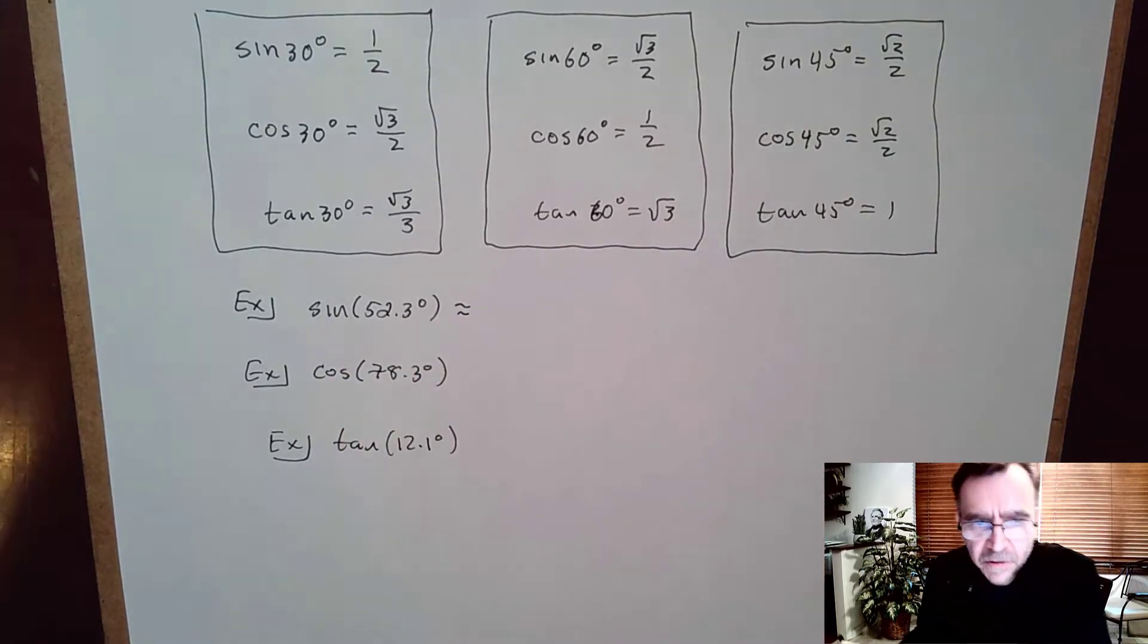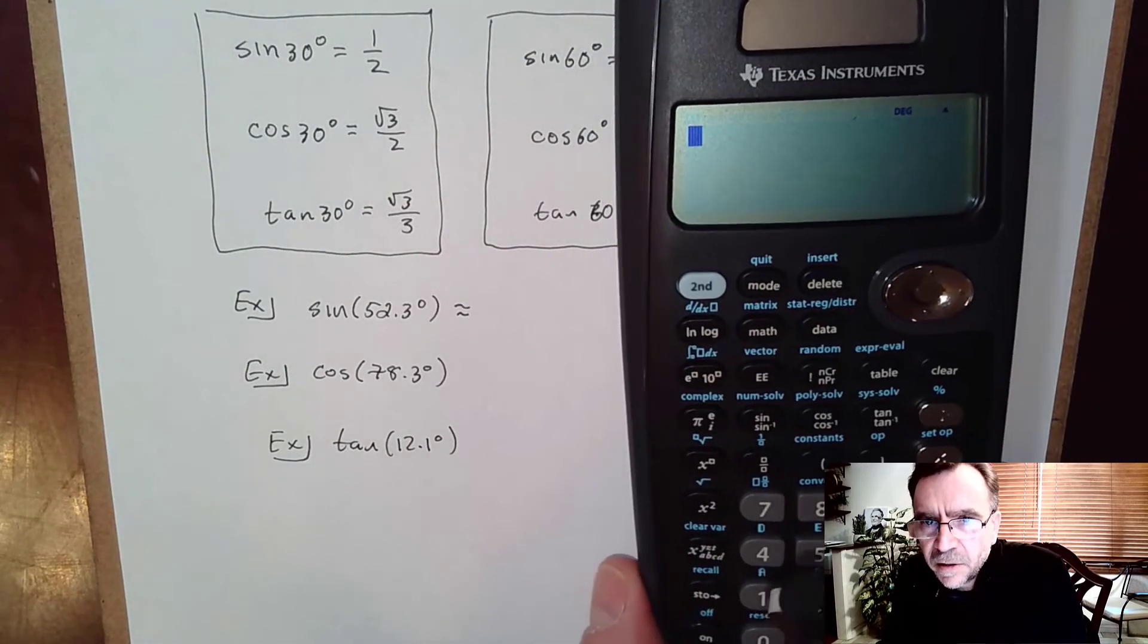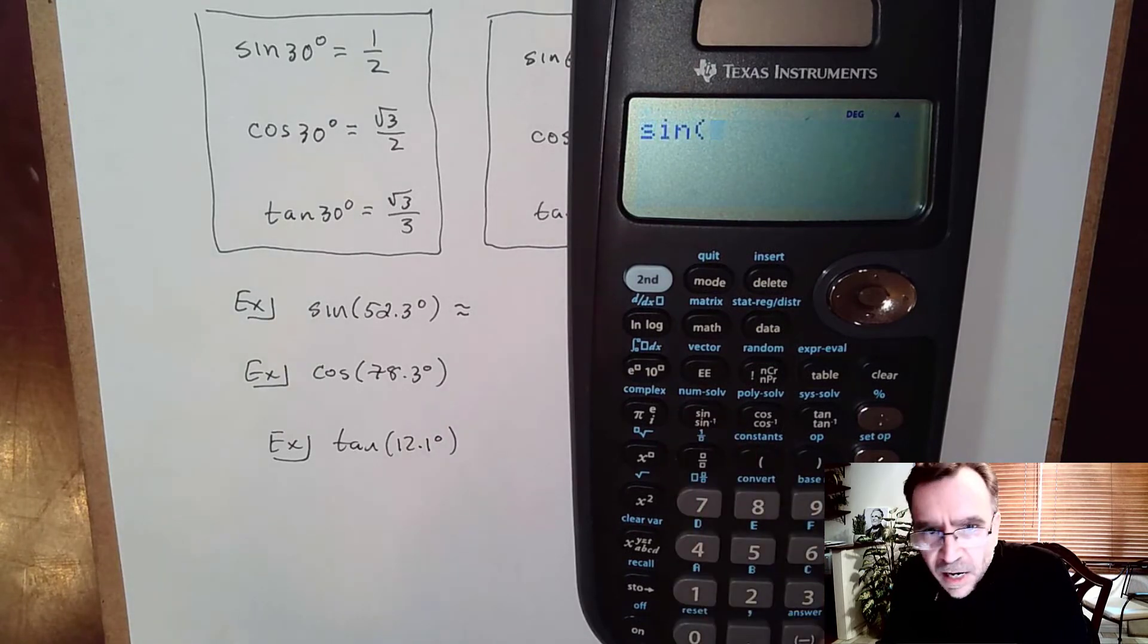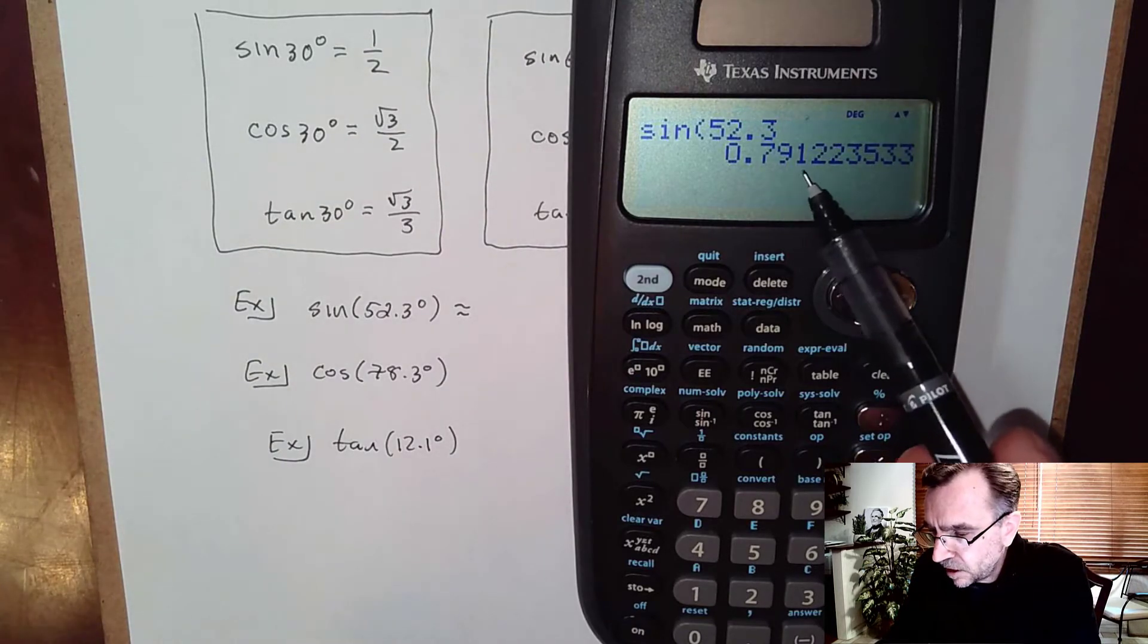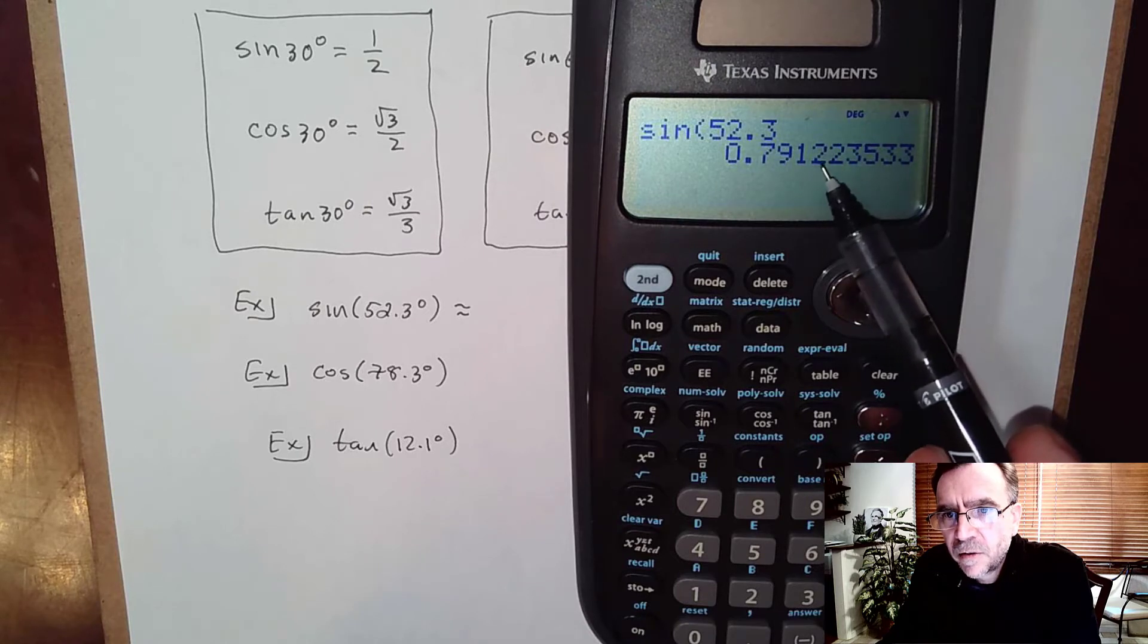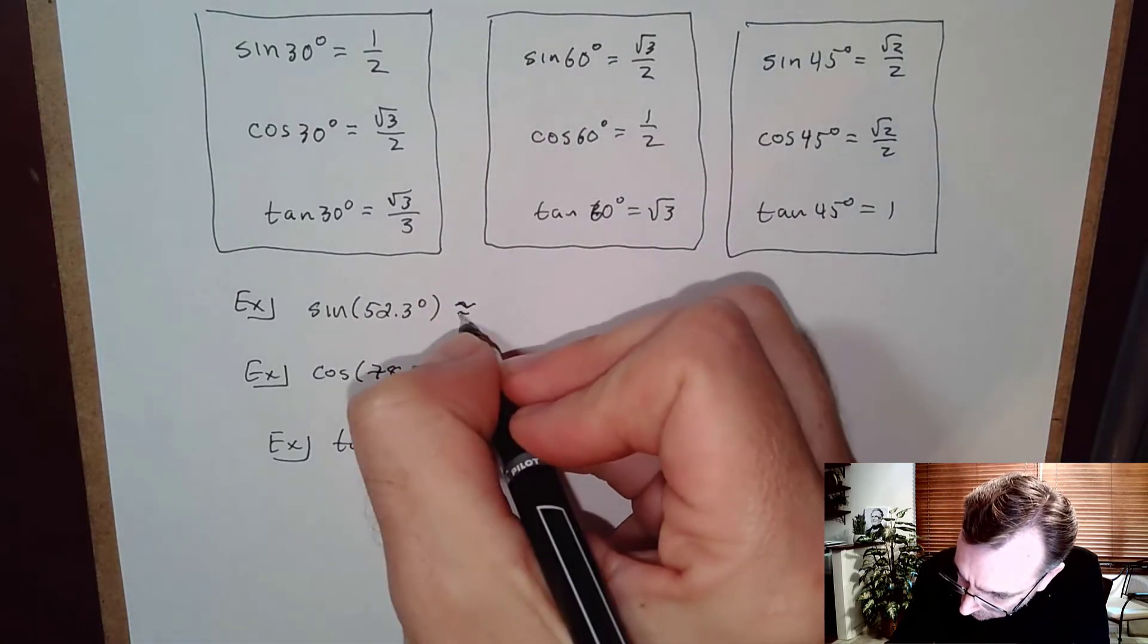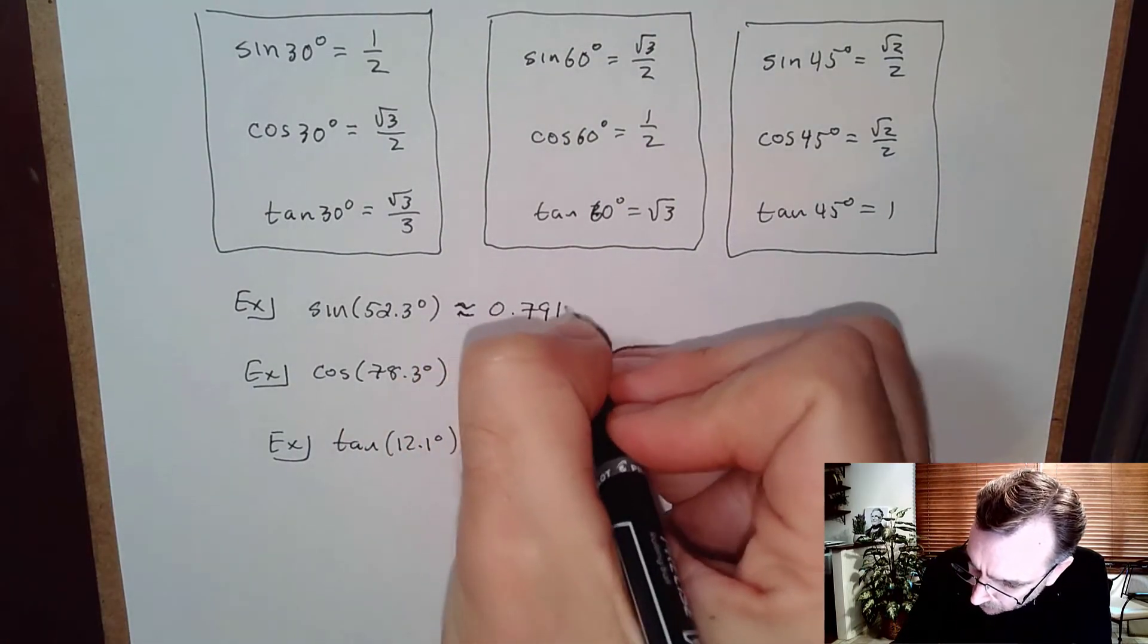When I do that and use a calculator, I'm going to get an approximation. On my calculator I type in sine of 52.3° and I get 0.7912. I look at the fifth digit, it's a 2, so I'm going to round that down, rounding to four places: approximately 0.7912.